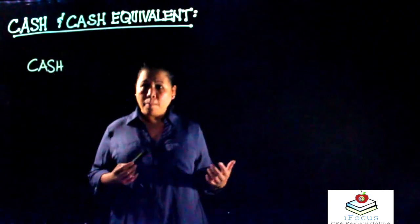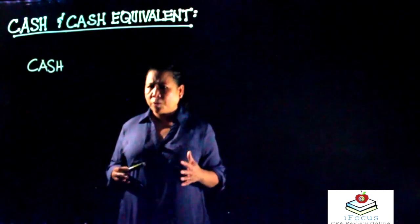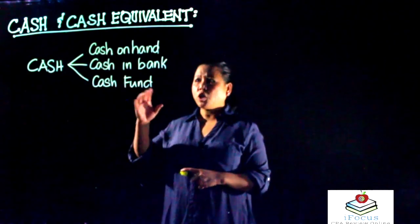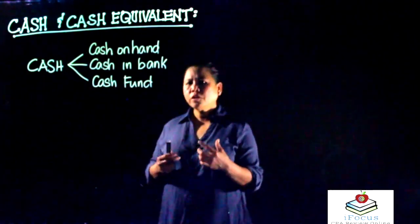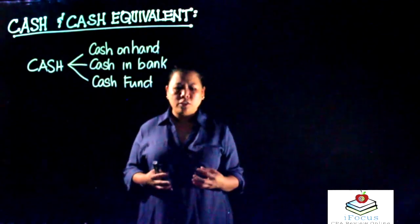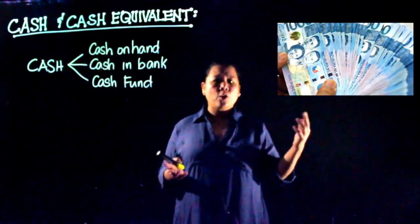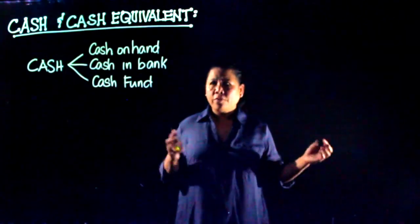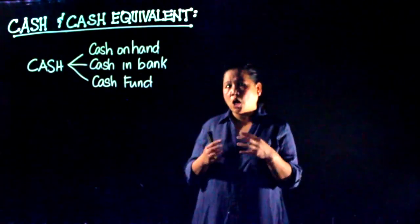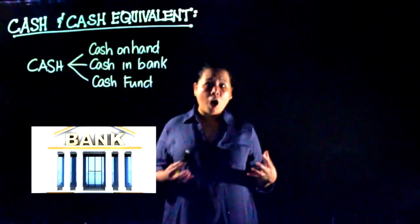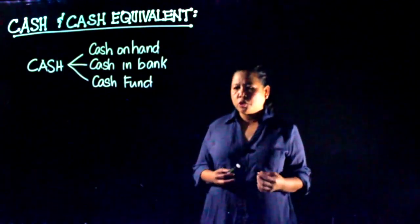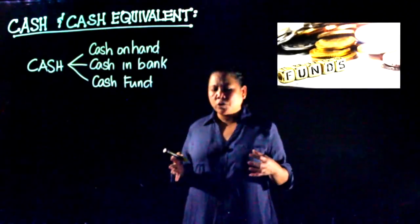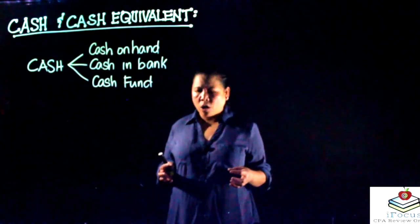Let's start with the term cash. Cash is simply the money of the company. The term cash has three components: cash on hand, cash in bank, and cash fund. Cash on hand consists of currencies, coins, and checks from other companies or customers. Cash in bank is where we deposit our collections and write checks to pay our obligations.